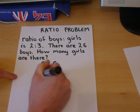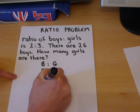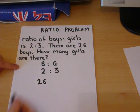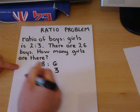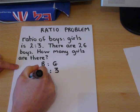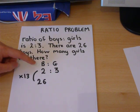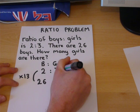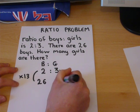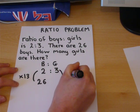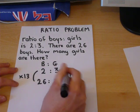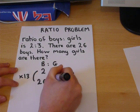So if there are 26 boys in the room, this means that there are 13 lots of these two boys. 2 times 13 is 26. For the ratio to maintain itself, there must also be 13 lots of girls. 13 times 3 is 39.